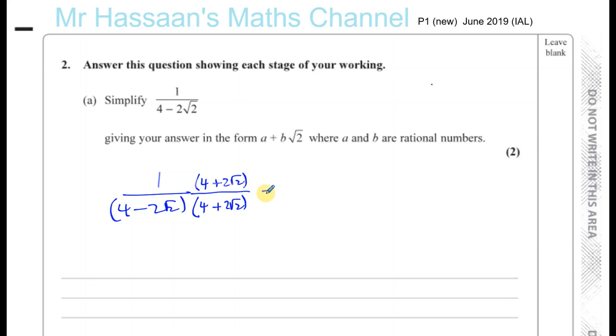Okay, so the numerator will be 4 plus 2√2. And the denominator will change. And you'll notice what happens is the irrational part will be cancelled out. So you have 4 times 4, which is 16. Now the middle term will be 8√2, minus 8√2, which comes to zero. The √2 term disappears.